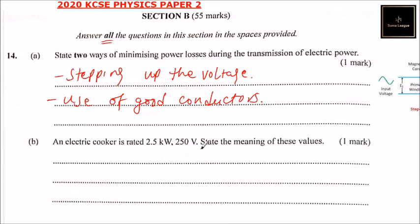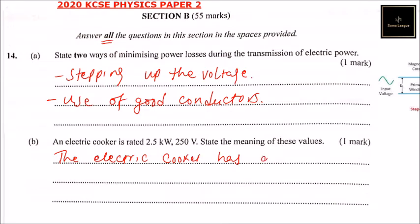250 volts indicates the potential difference at which the gadget, the electric cooker, is operating. So you can say the electric cooker has a power output of 2500 watts when operating at a potential difference.